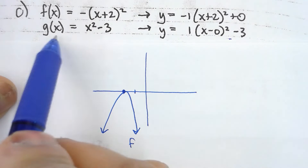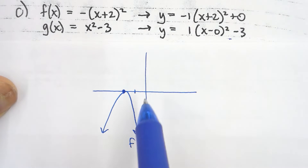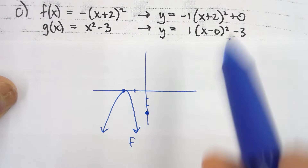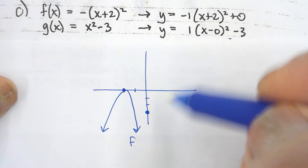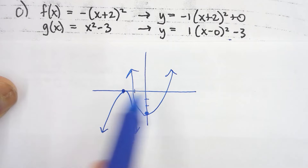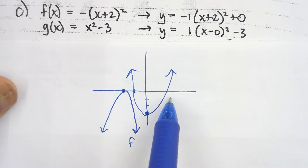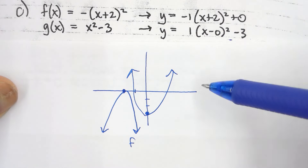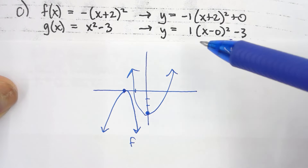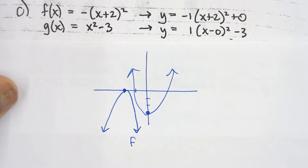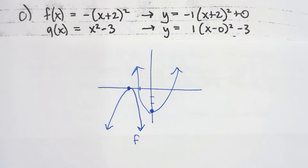For function g(x), h is zero and k is negative three, putting the vertex at negative three on the y-axis. The curvature is positive one — normal curvature opening upward. You should be able to sketch a parabola from standard form very quickly. I'm not saying graph it, just sketch it — it's representative. Let's do one more: question 2, more of a long-answer type question.